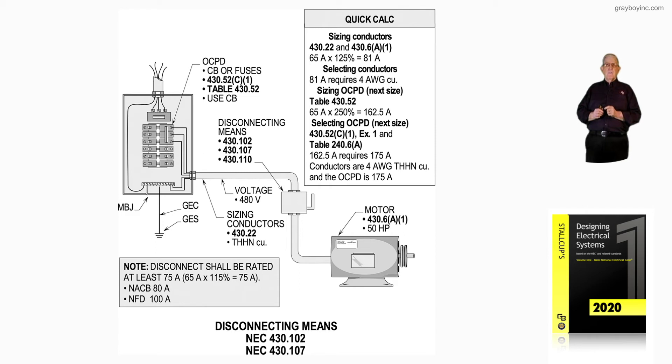250 percent of 65 is 162.5. Decision time. Do I round down or round up? By the 2020 code, you can do whatever you want. I can round it down to 150 or round it up to 175. My choice. But remember, 430.52C1 says round down below the 250 percent. But if I apply exception one to 430.52C1, round up. You can only use exception one when the round down and round up size will not allow the motor to start and run.